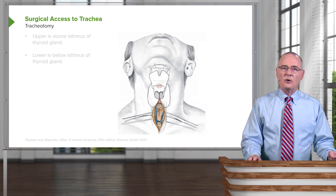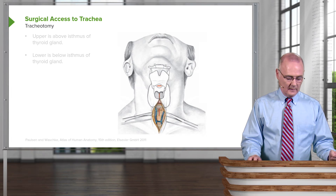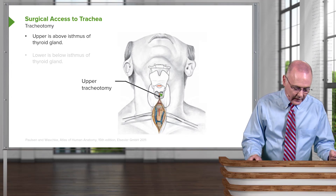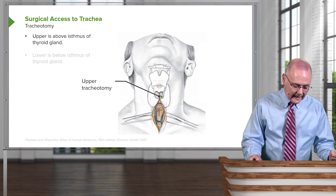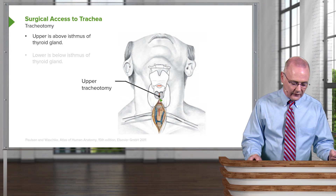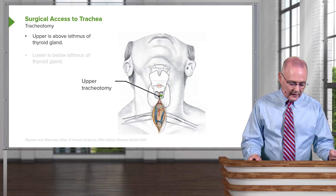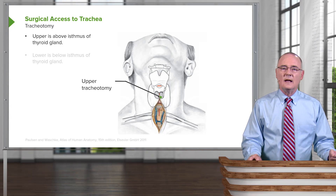The other approach is the tracheotomy, and there's an upper one and a lower one. The upper tracheotomy uses a vertical incision running in the area between the inferior aspect of the cricoid cartilage and the isthmus of the thyroid gland below, providing surgical access to the trachea in that space.